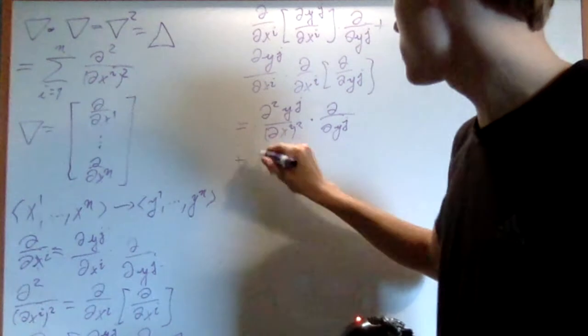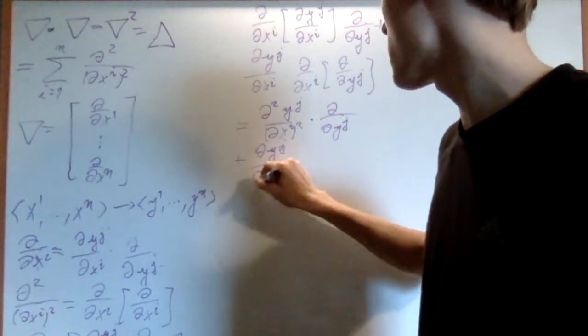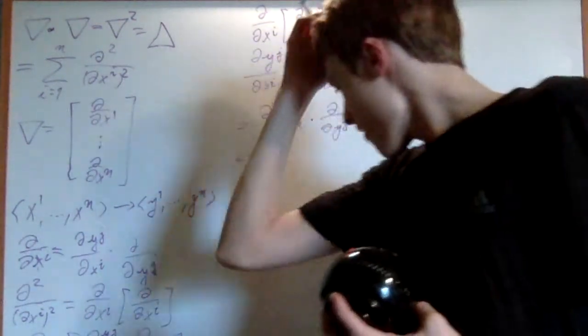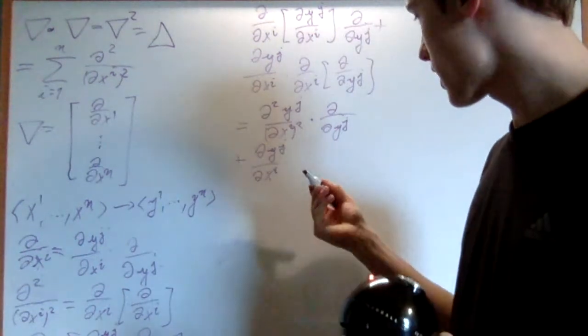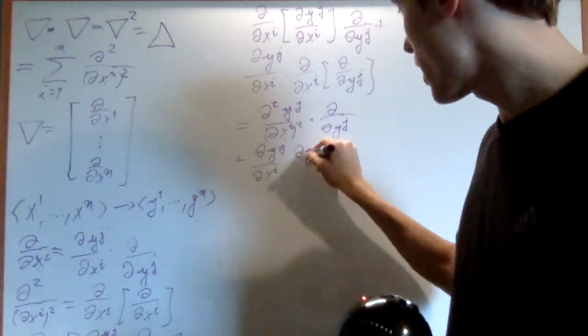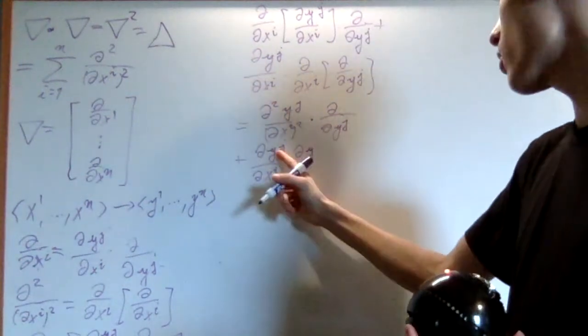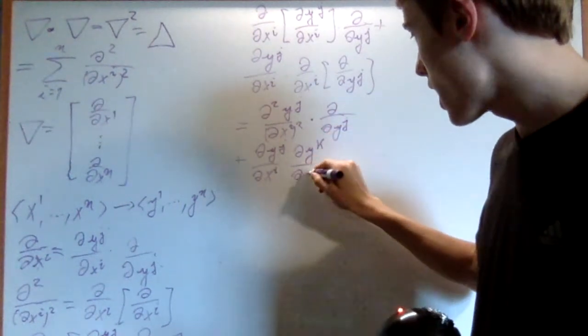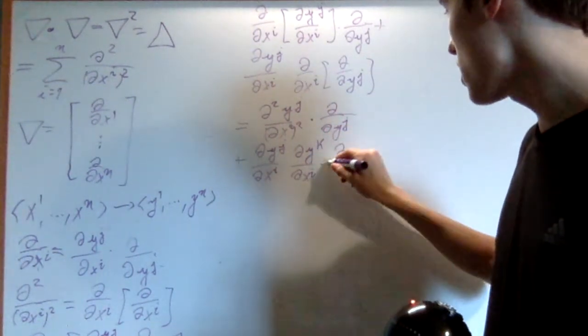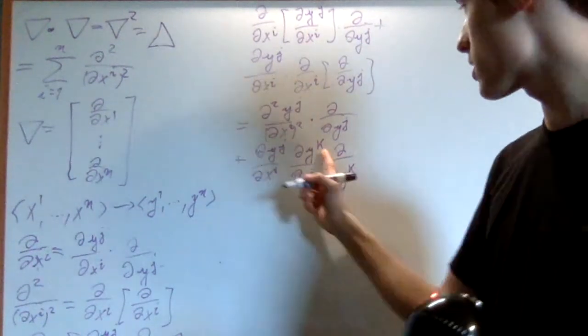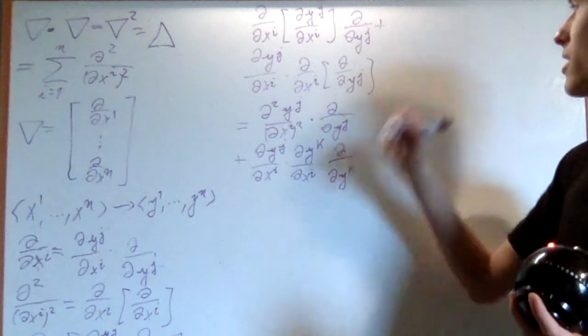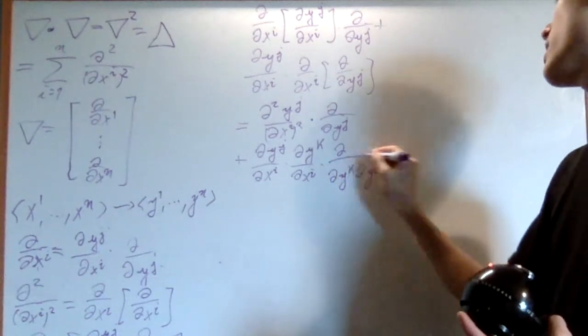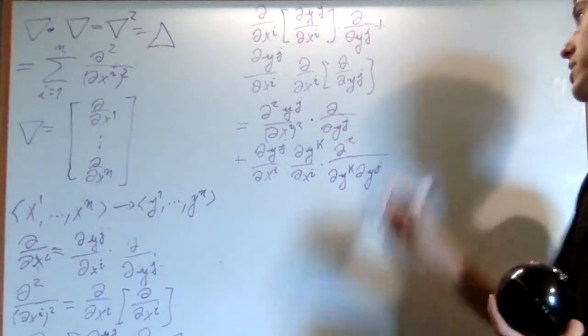Then after that, we're going to have plus del yj on del xi times this right here. I can use the definition again. So the definition here is that I do del y - now I'm going to replace j with k because I'm already using j here and I don't want to confuse myself. So this is going to be del yk on del xi, and then multiply that by del on del yk, and then we apply this on del on del yj. But that's just putting a del on del yj on the bottom squaring the top.